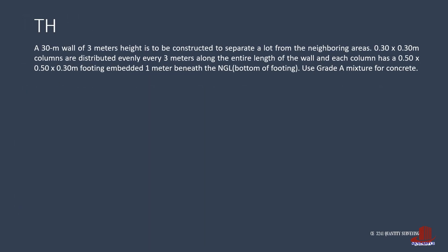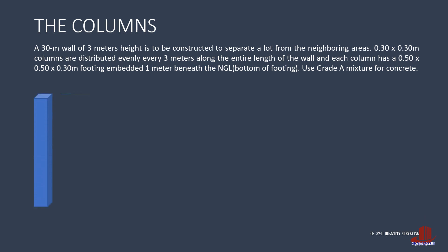Let's start estimating the concrete works from the column. The column stands 3 meters from the natural grade line, but it is also placed such that the bottom of the footing is 1 meter deep, giving an additional length of the column beneath the grade. This is computed as 1 meter less the thickness of the footing. The volume of the columns is computed as 11 columns multiplied by dimensions of 0.3 by 0.3 and the total height of 4 meters minus the footing depth of 0.3 meters, giving 3.663 cubic meters.